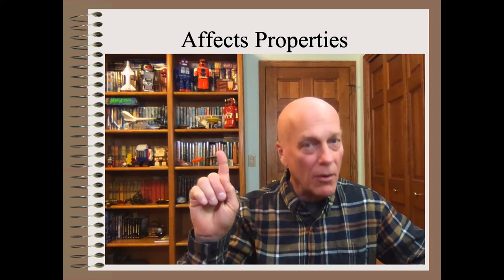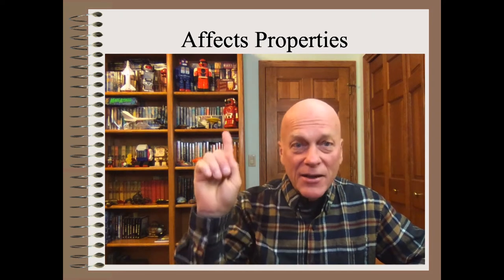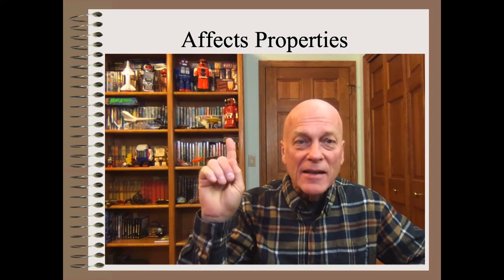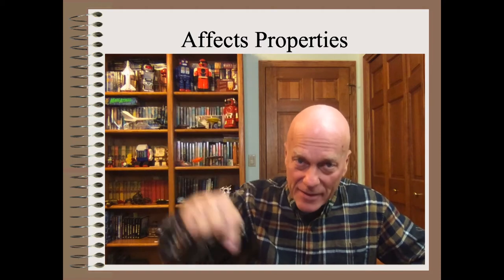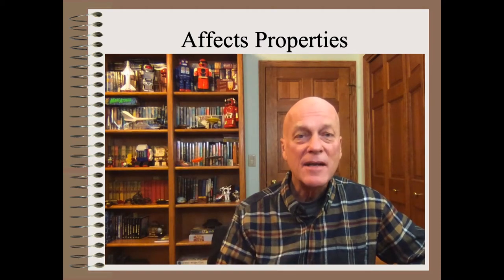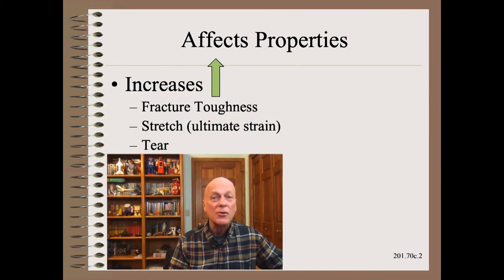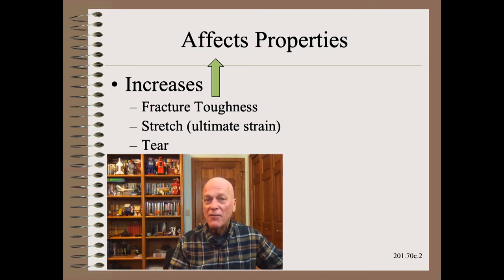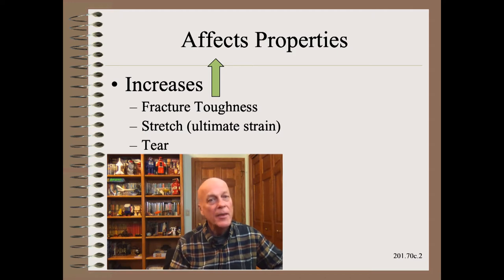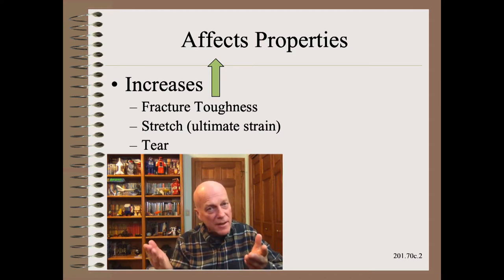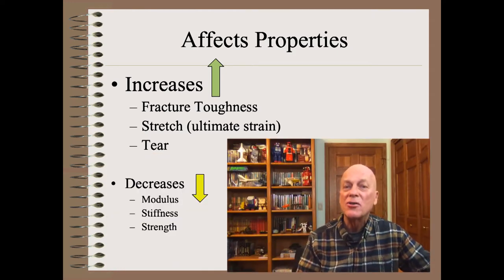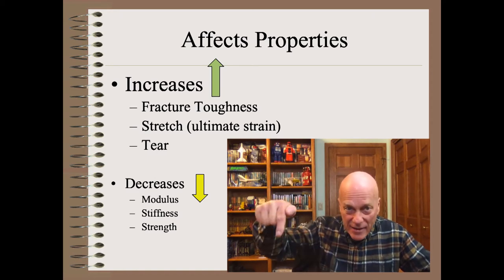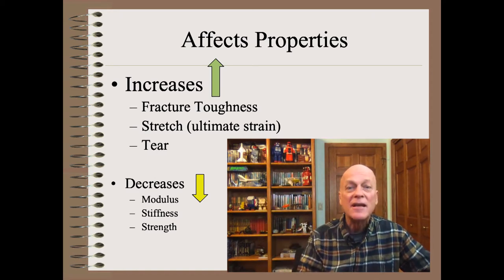Increasing moisture or temperature tends to increase some test values and decrease others. For example, increases of moisture or temperature tend to increase fracture toughness, stretch, and tear test values. Conversely, increases of moisture or temperature tend to decrease modulus, stiffness, and strength test values.